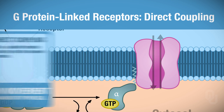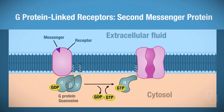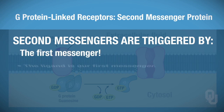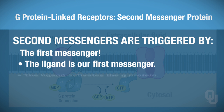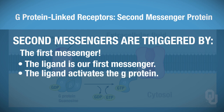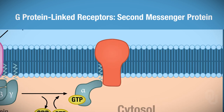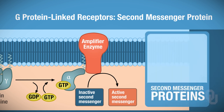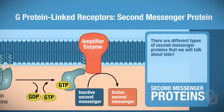Then we have the second messenger system, which is also G-protein linked. Second messengers are triggered by the first messenger—that's what the ligand is—and that activates your G-protein. Nothing different so far from direct coupling, but now things differ: the G-protein activates the amplifier enzyme, and when the amplifier enzyme is activated, that activates a second messenger. The second messenger can then either activate or inhibit cellular pathways.